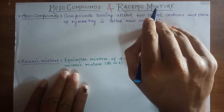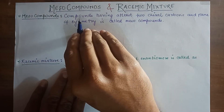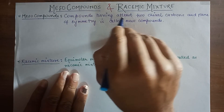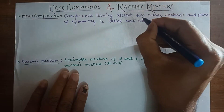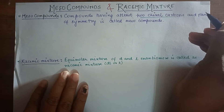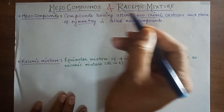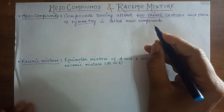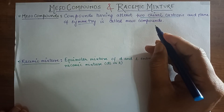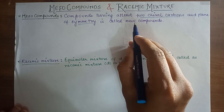So let us see what are meso compounds. Compounds having at least two chiral carbons and a plane of symmetry is called a meso compound. We will see this by taking the example of tartaric acid.